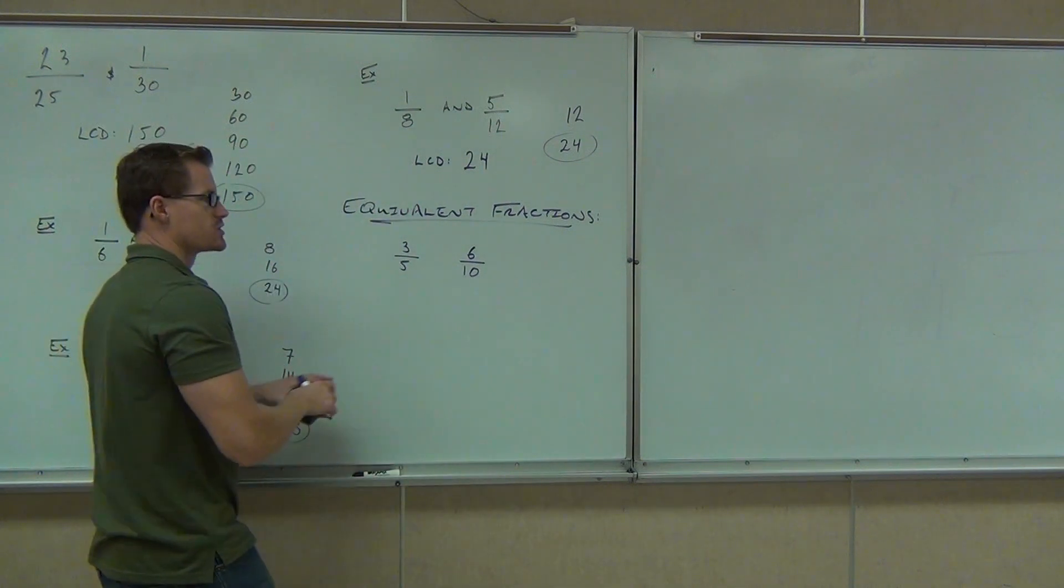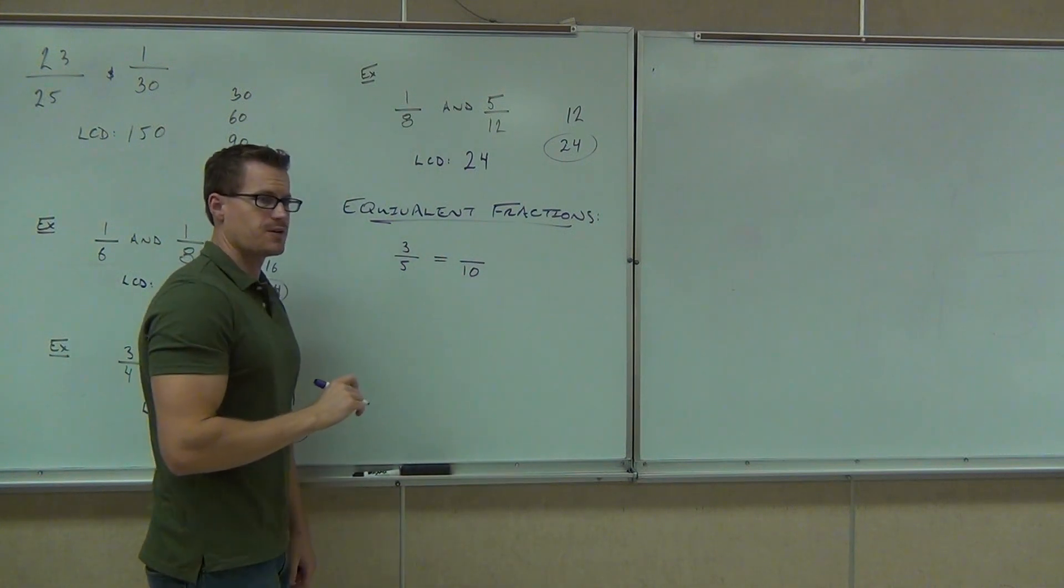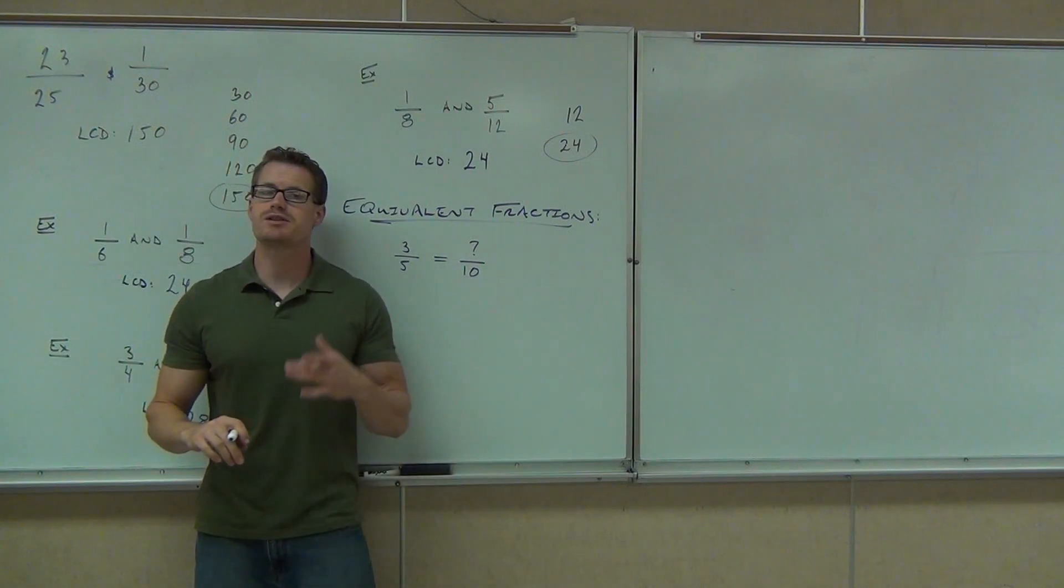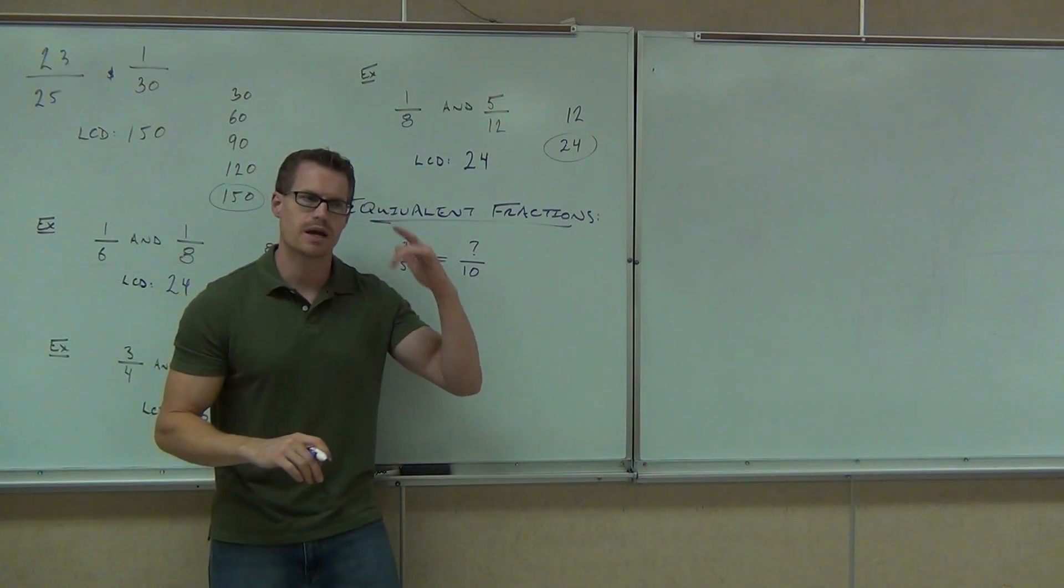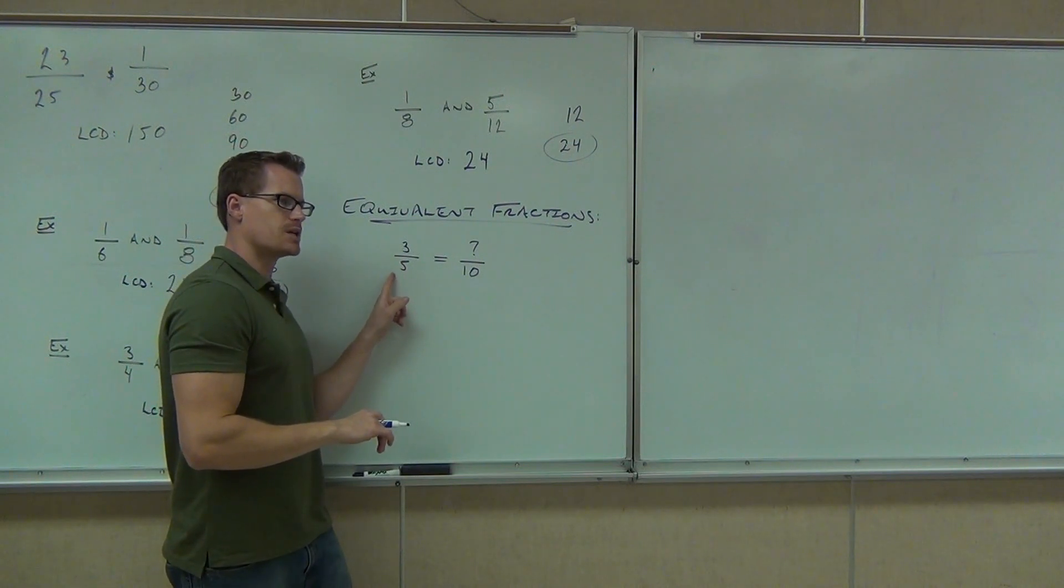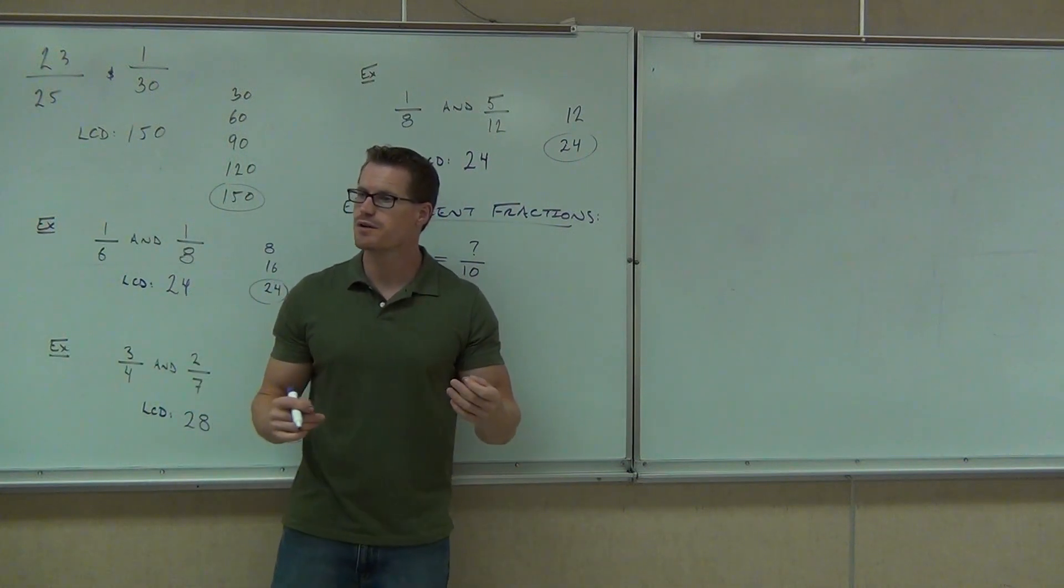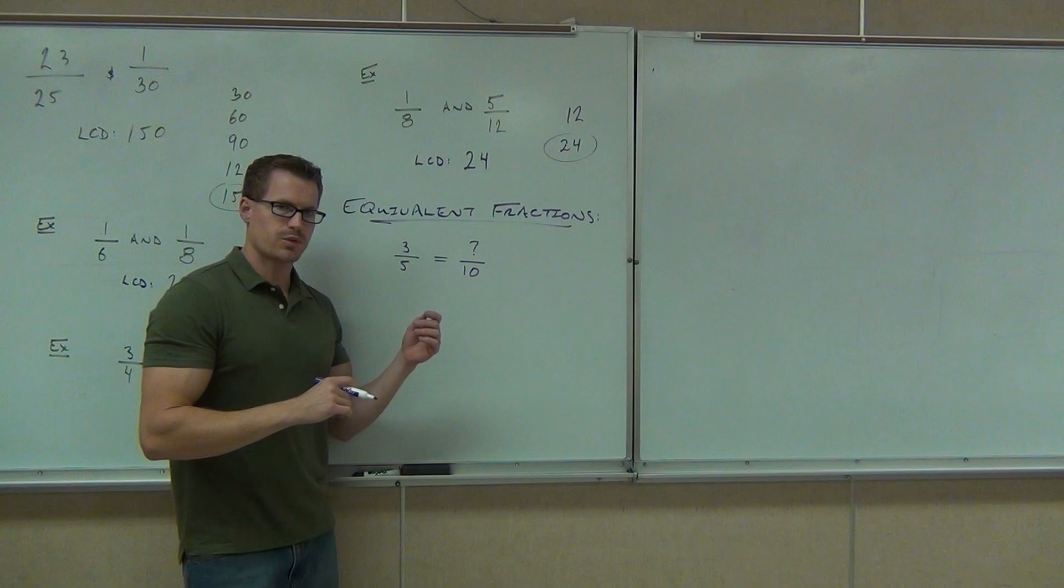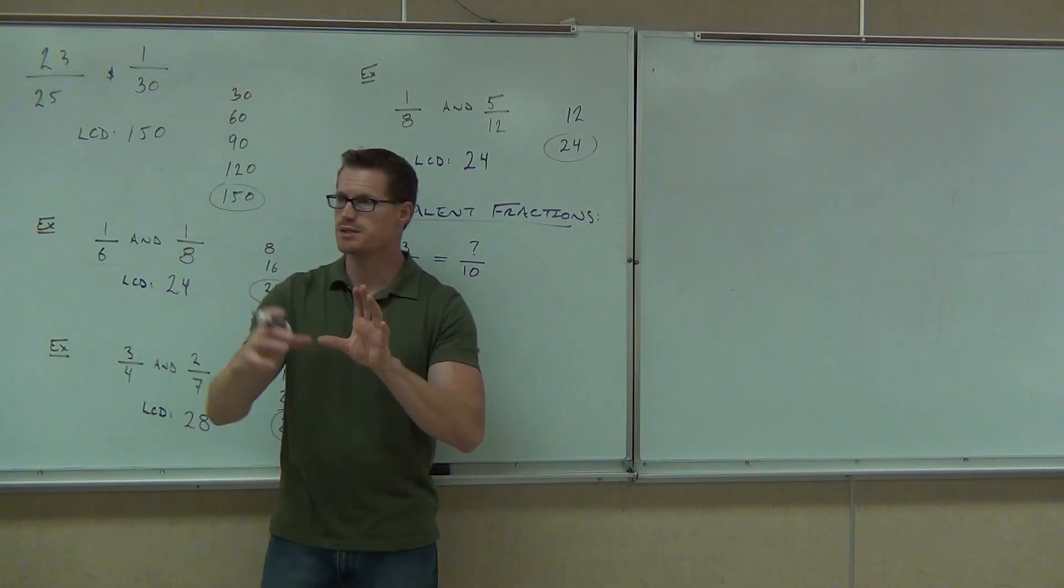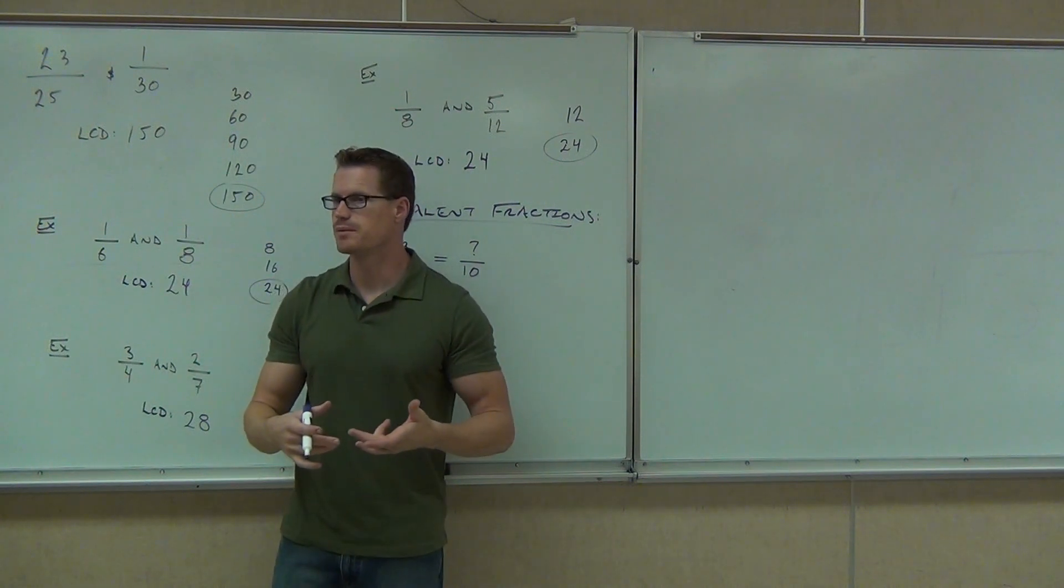I'm going to give you some expression that says three-fifths equals something over ten, where I don't know what the something is initially. I'm asking you to find it. So you have to think in your head, what fraction is going to be the same as three-fifths, only instead of having a five down here in the denominator, I now have a ten. And here's how you figure this out. What you've got to ask yourself is, what number did I need to multiply by in order to get from five to ten? Because what we know is, if we multiply the denominator by a number and the numerator by the same number, you'll have an equivalent fraction. That's the idea.